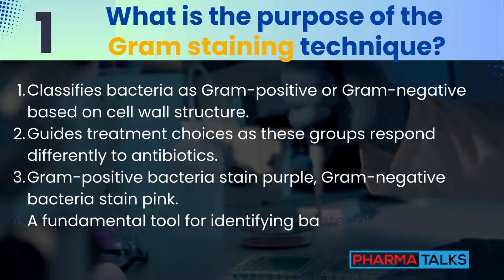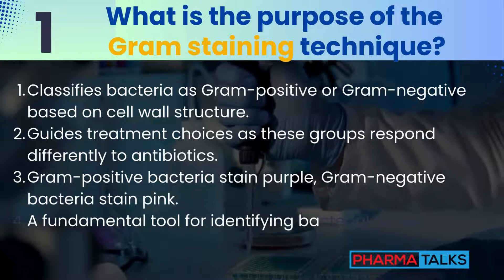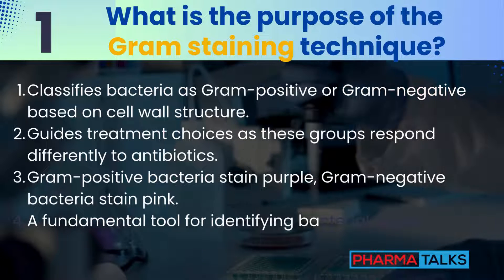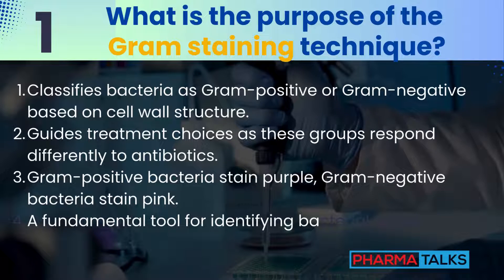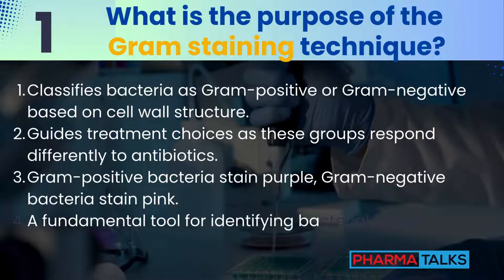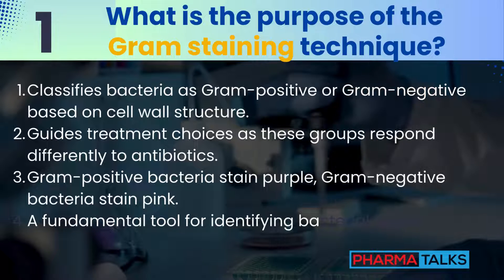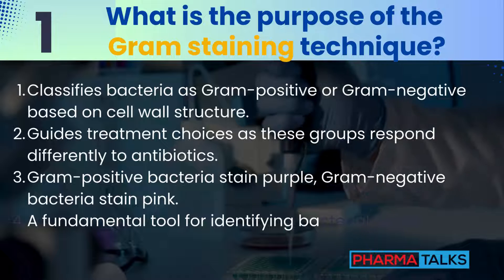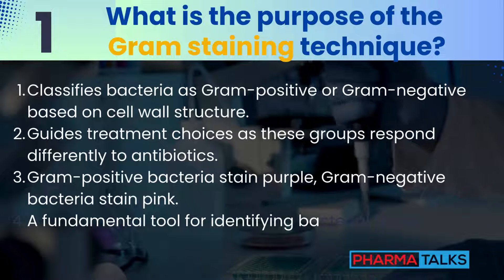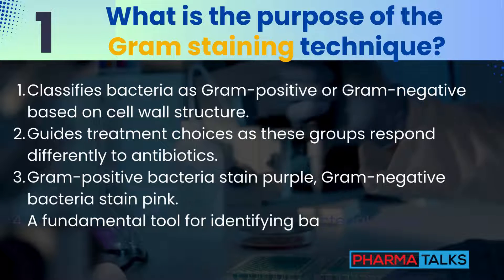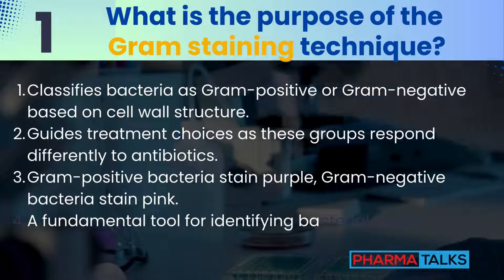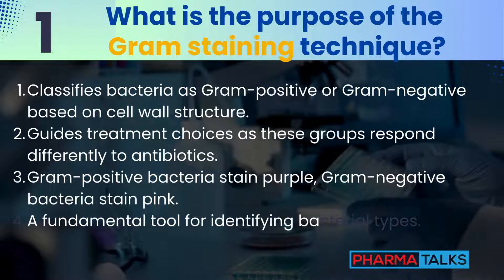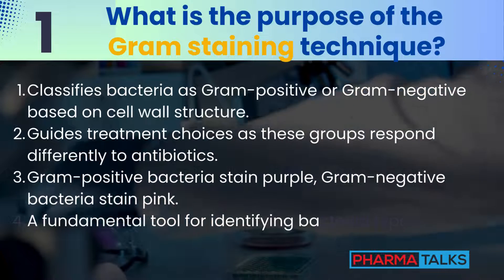What is the purpose of the gram staining technique? Gram staining helps classify bacteria as gram-positive or gram-negative based on their cell wall structure. This distinction guides treatment choices, since these groups respond differently to antibiotics. Gram-positive bacteria stain purple, while gram-negative bacteria appear pink. It's a fundamental tool in microbiology for identifying bacterial types.